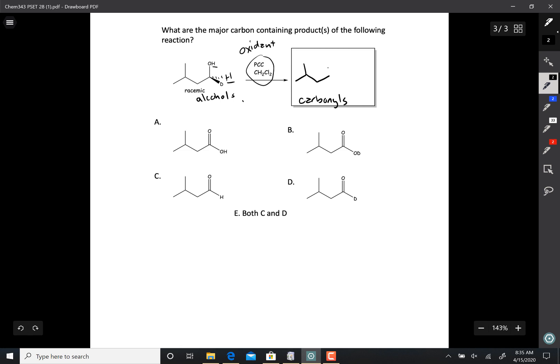Now, if you use PCC, you have a tendency to stop at the aldehyde stage. So if we take a look at this, we take a hydrogen off the oxygen, hydrogen off the alpha carbon, we get this product right here.